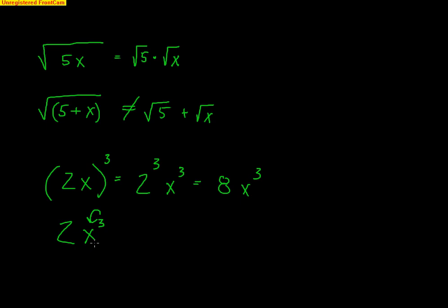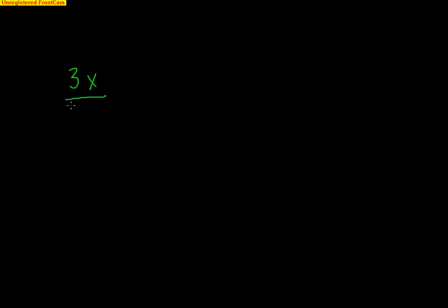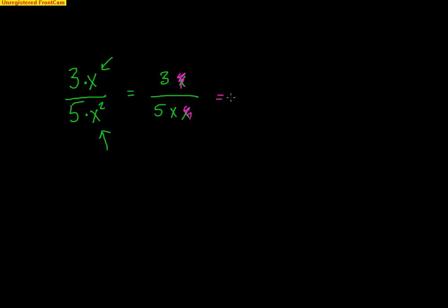Dividing out with fractions is probably where we see the most mistakes — fractions have to be extremely carefully reduced. For example, 3X over 5X squared: this is 3 times X on top, and 5 times X times X on the bottom. Because it's all multiplication, the X on top can cancel with one of the X's on the bottom, leaving a final answer of 3 over 5X. Be careful not to try to cancel out more than you can.